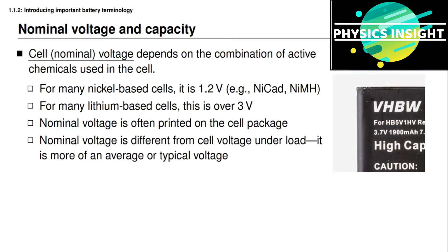The nominal voltage is a kind of average or typical voltage. The voltage of a cell at any point in time will be different from this nominal voltage — it could be higher or lower depending on how the battery cell has been used in the past.